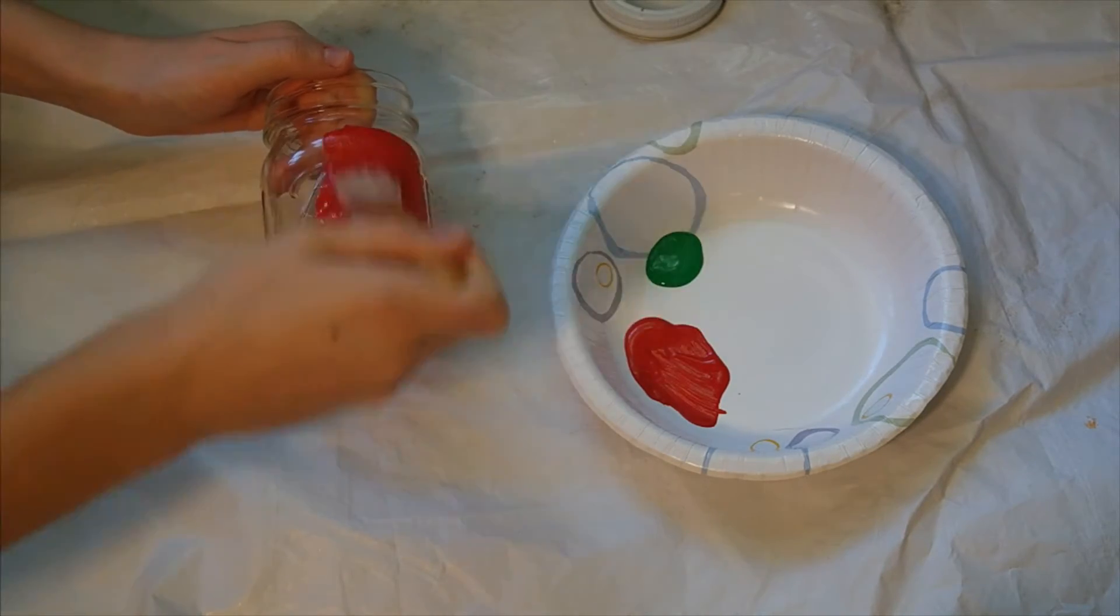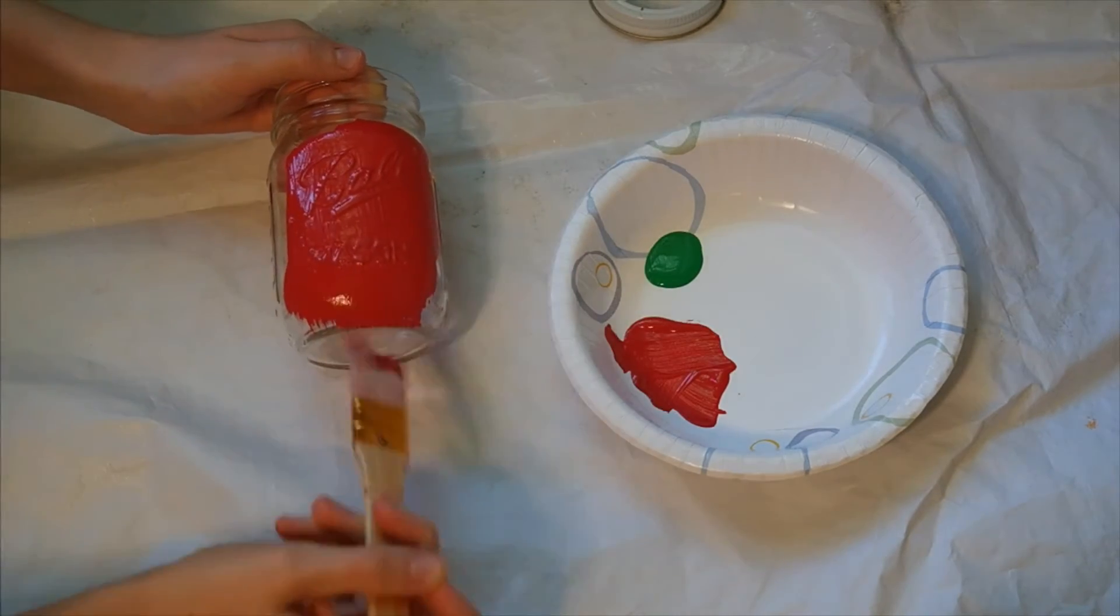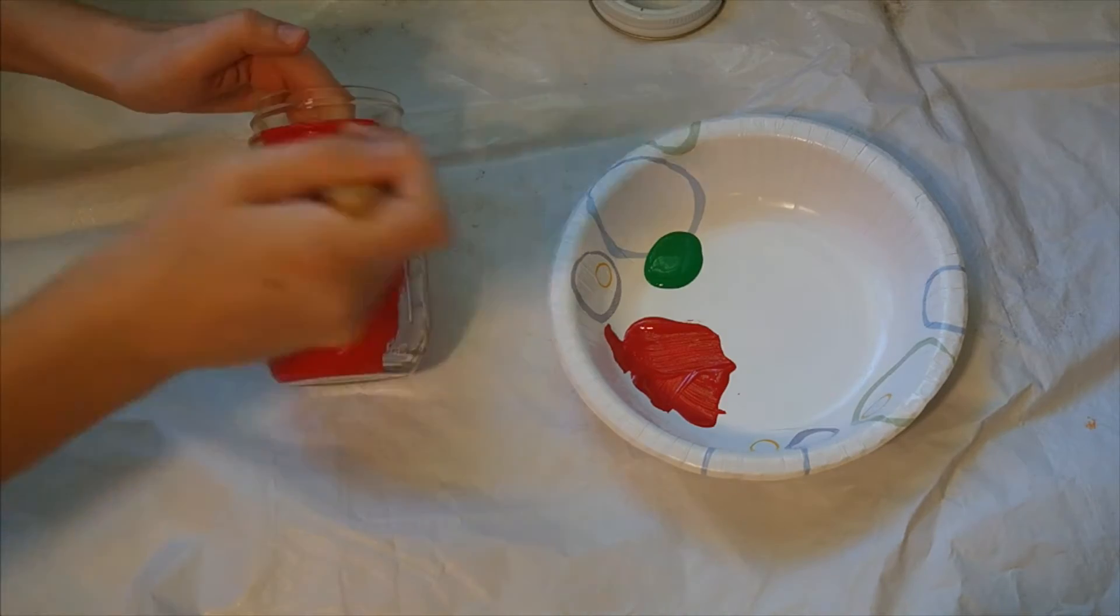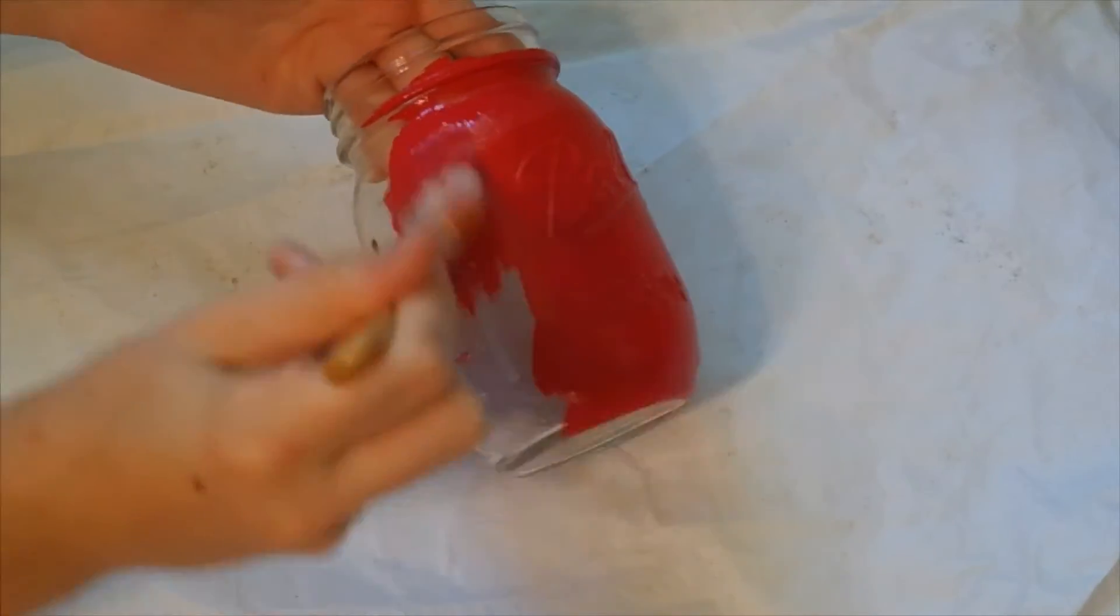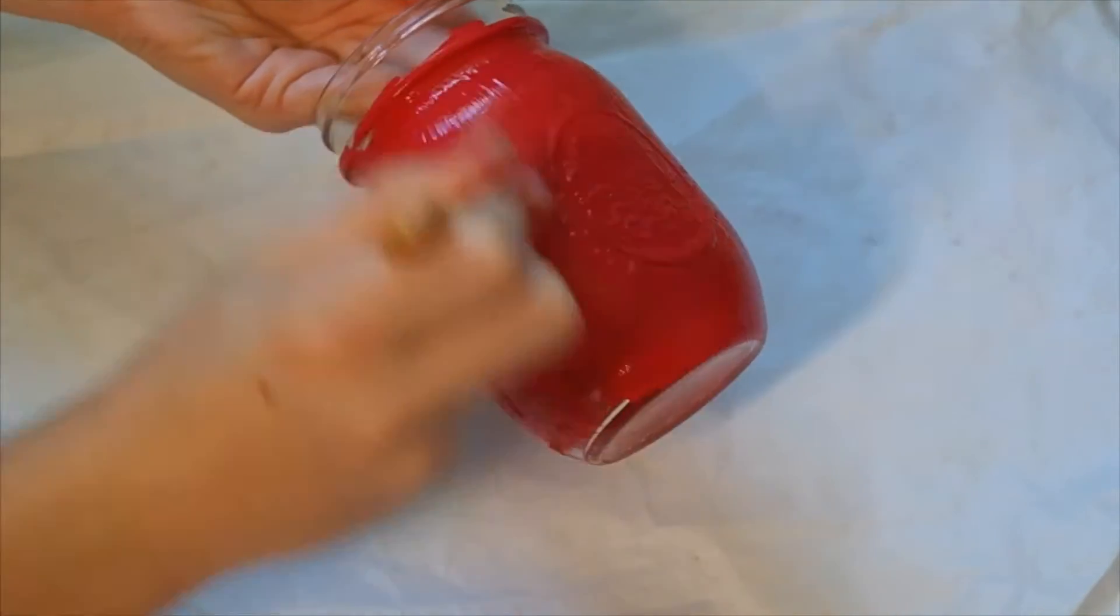Paint the entire jar red. Make sure to paint your jar a little bit high to where you screw on the top to make sure that when you put the top back on, there's no unpainted area showing. You may need to add multiple coats so the jar is completely opaque.